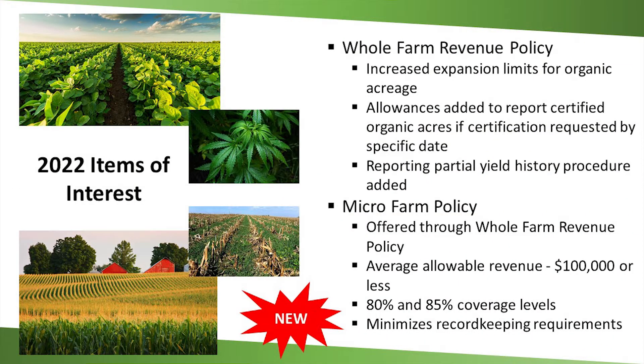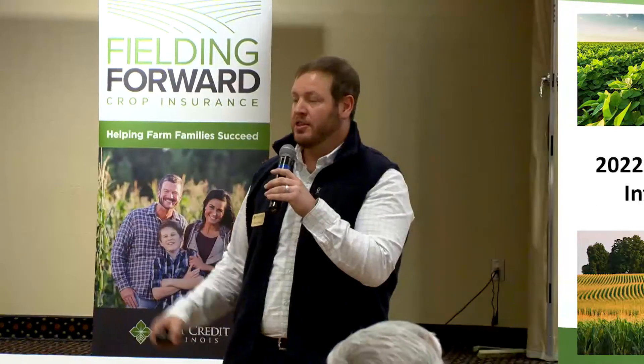Another one I'm not going to touch on too long: whole farm revenue policy. A few changes to it. Whole farm is an insurance policy based on your total revenue for whole farm, but you've got to have a minimum of three different crops or livestock mixed in. Not something we use a lot around here. Changes include an increase in expansion limits for organic and the way you can certify organic acres. The new thing is the micro farm policy — more for your farmer's market type, small farmer doing produce. If there's any interest, talk to us after or meet with your crop insurance agent.